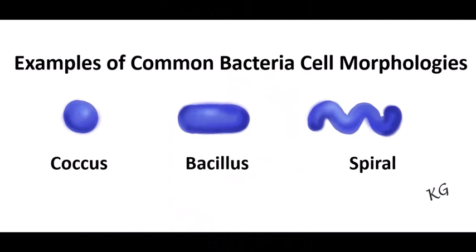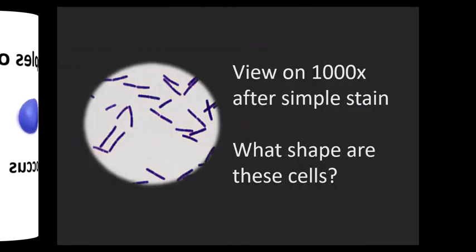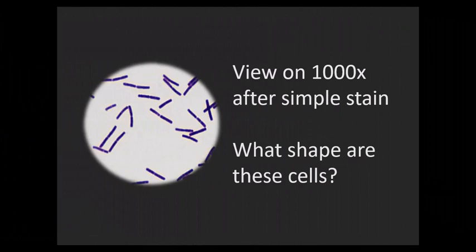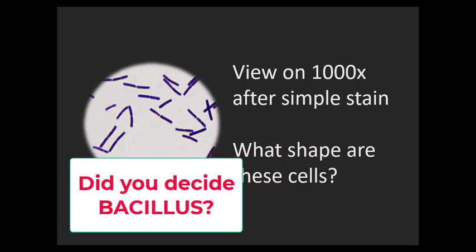Although bacteria can grow in amazing variety of shapes, typically a species will have a shape that is genetically determined. Three common shapes are bacillus, coccus and spiral. So the first thing you want to do when you've focused your microscope is determine that cell shape. This is also referred to as cell morphology.